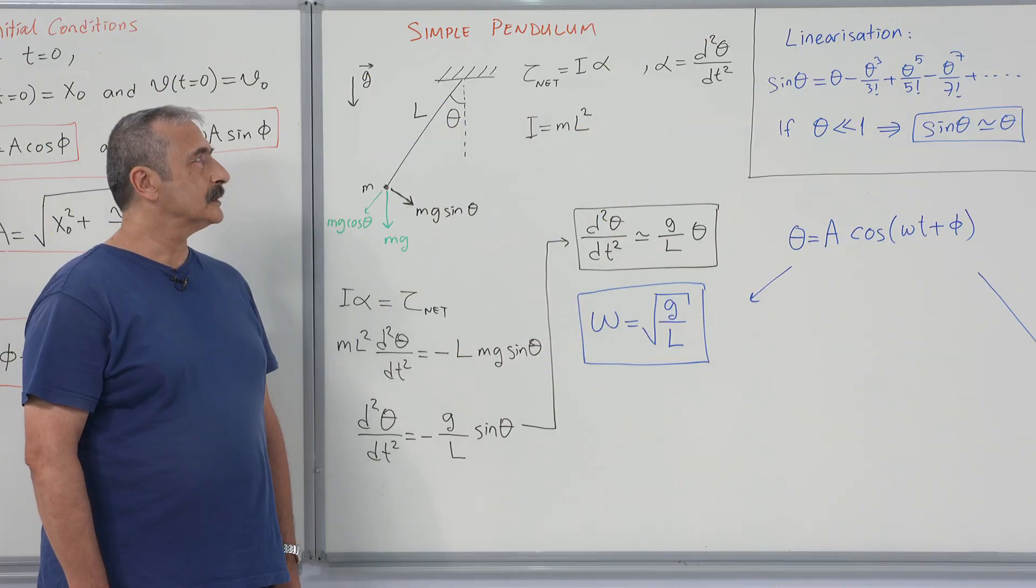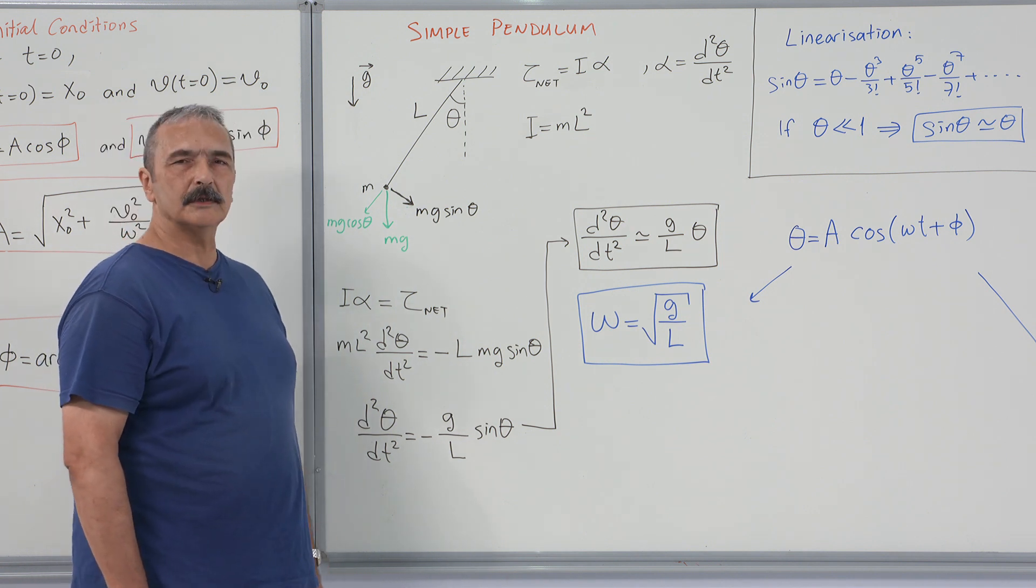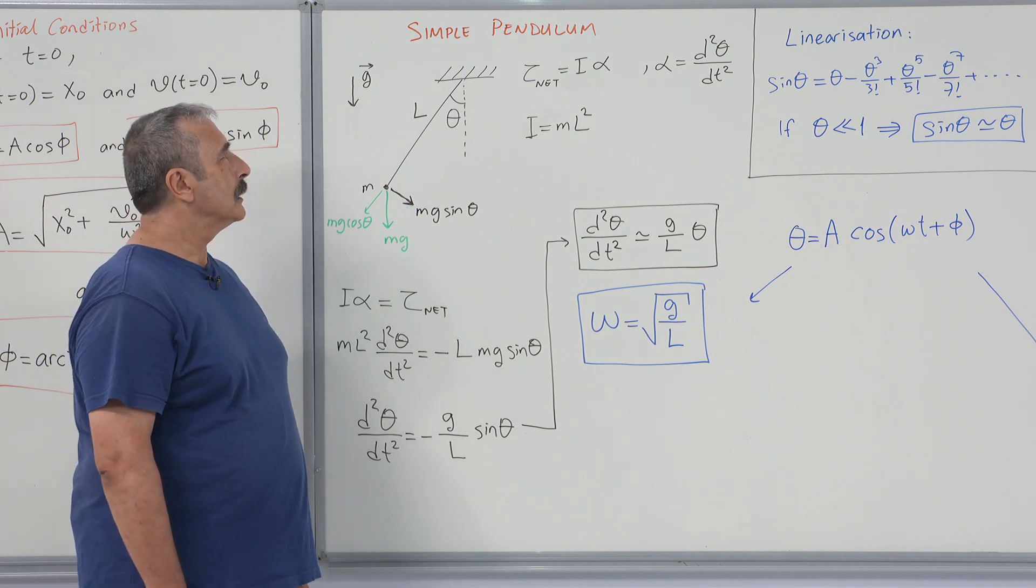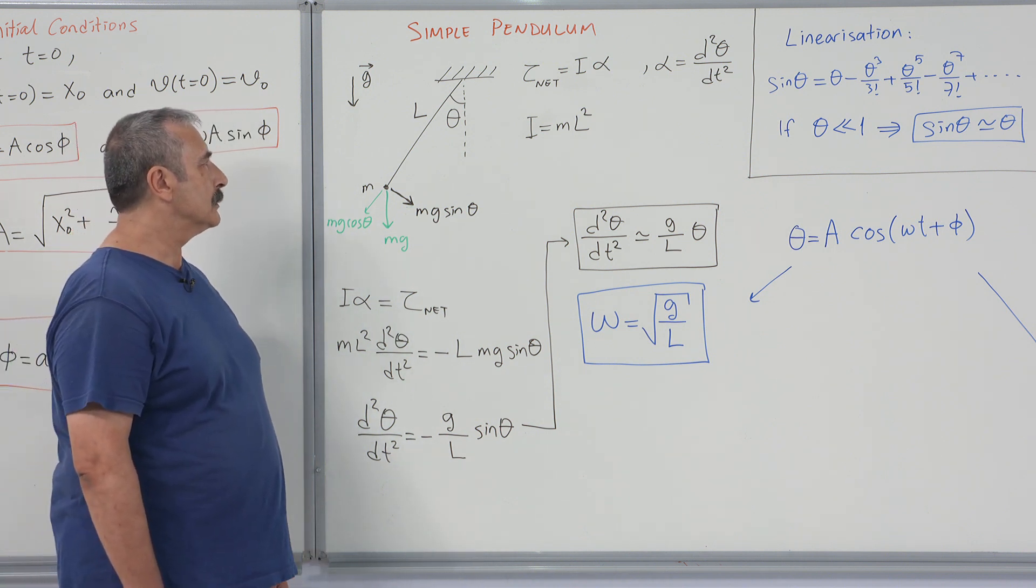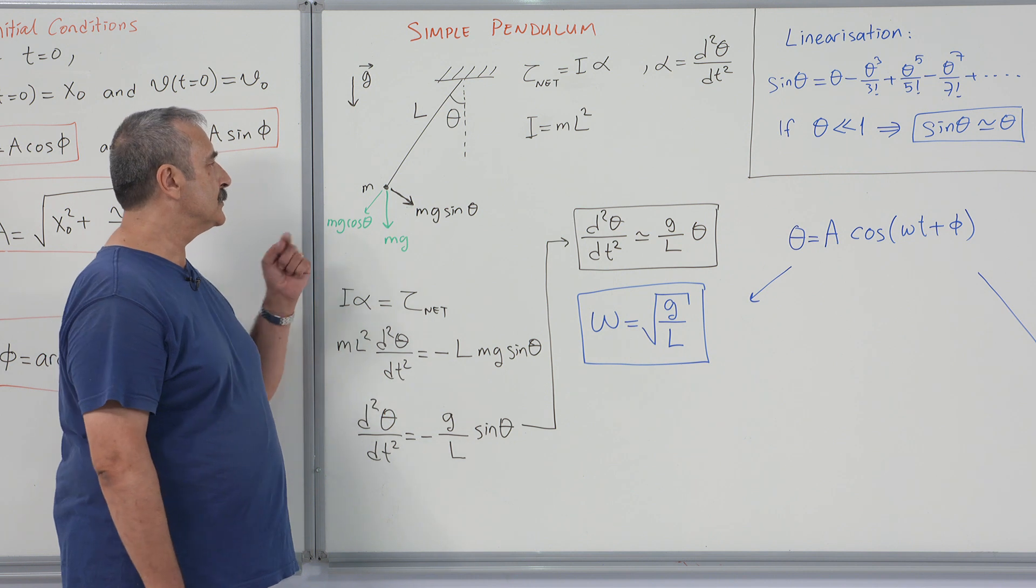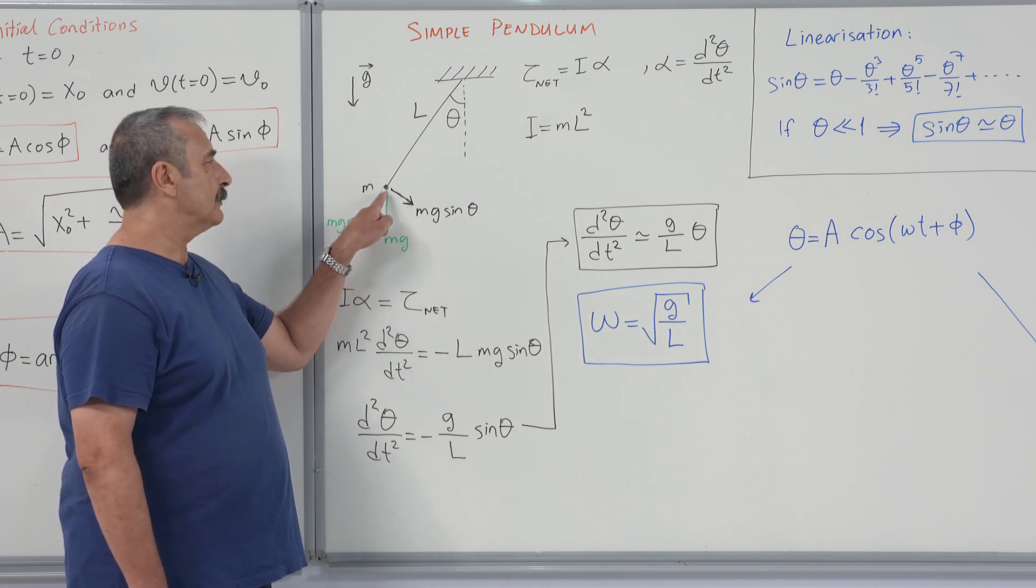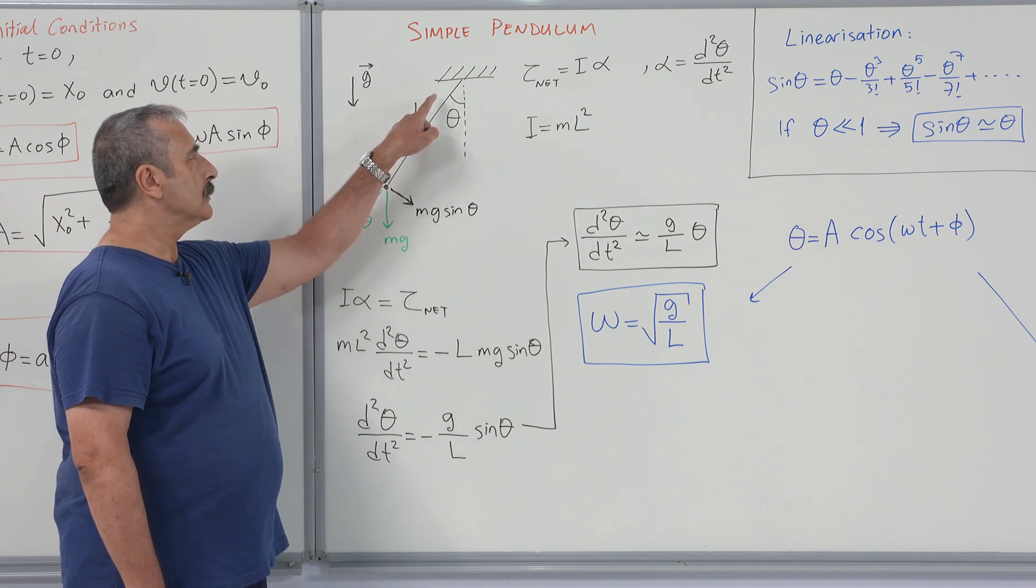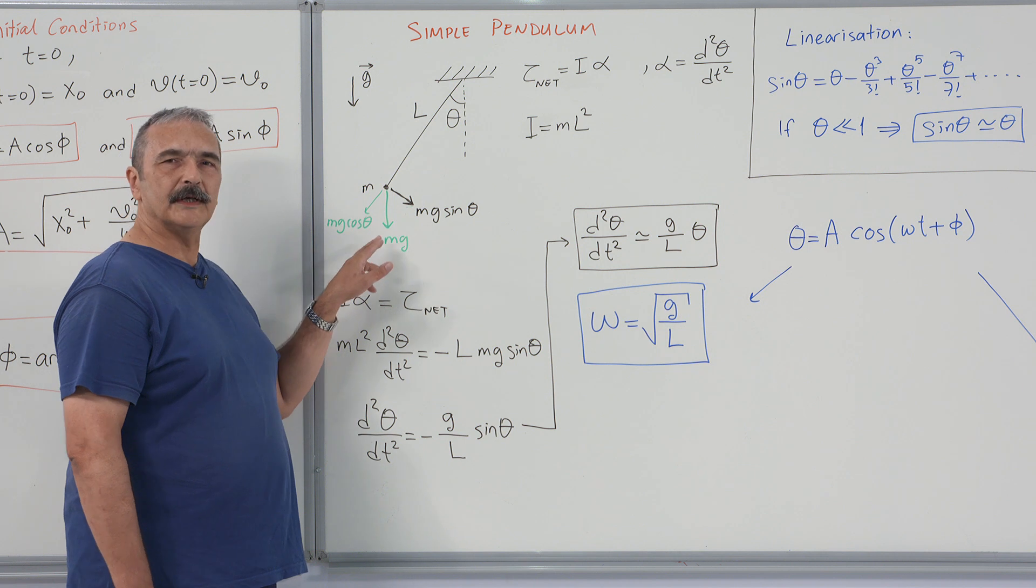Two random examples on simple harmonic motion are the simple pendulum and physical pendulum. Actually, simple pendulum is a mathematical approach. It's not a real physical system.